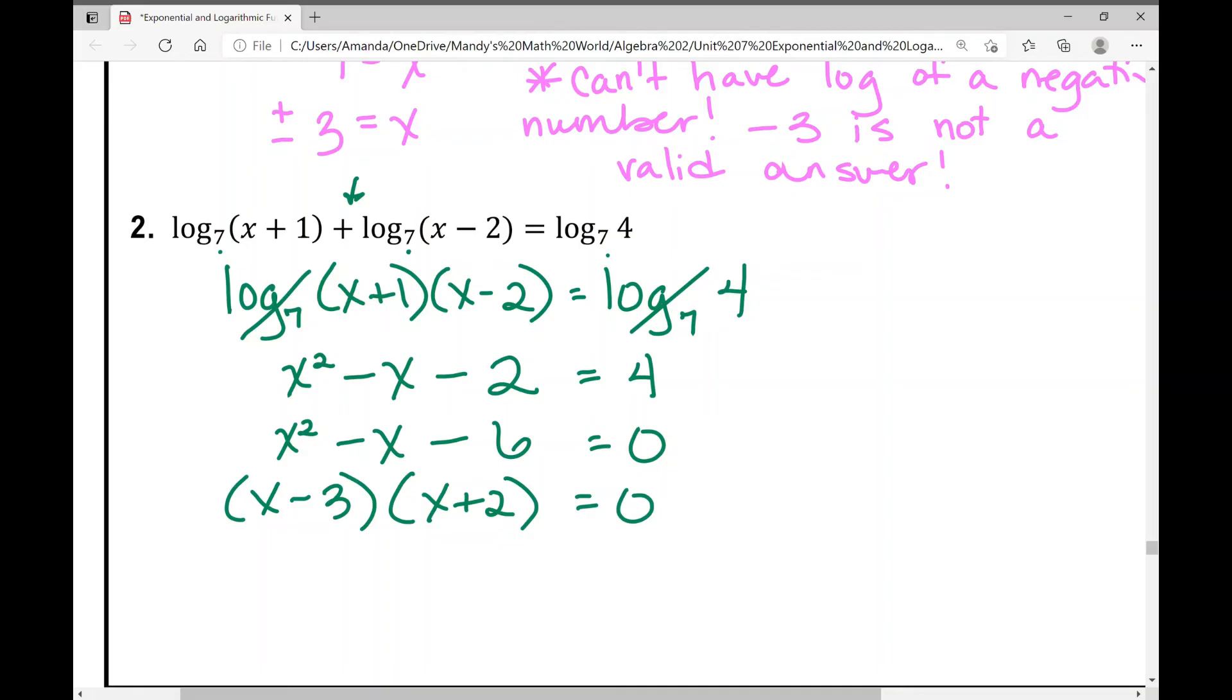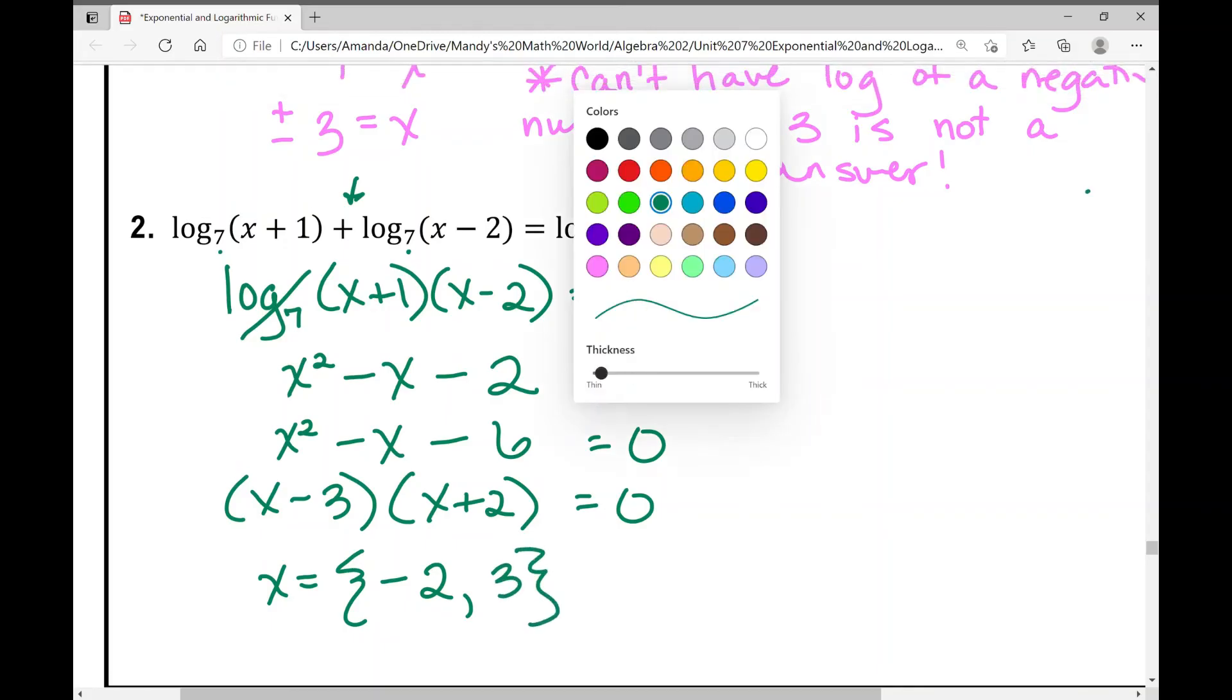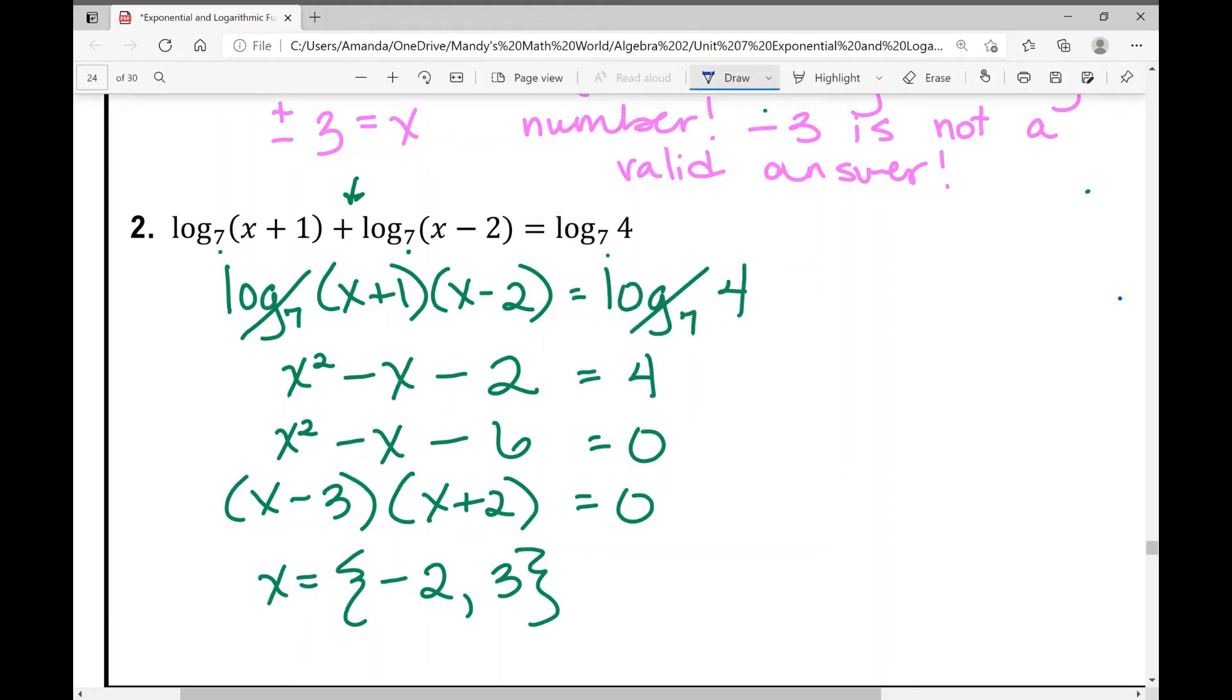We're going to use the zero product property to solve. Set those factors equal to 0 and solve. When I do that, I get x equals negative 2 and positive 3. So now we need to go through, especially when we have multiple answers, and make sure that our answers are valid.